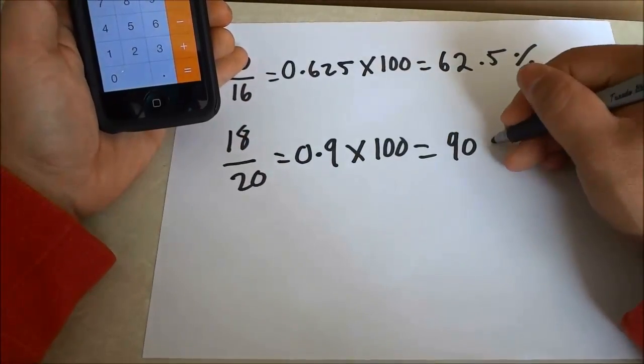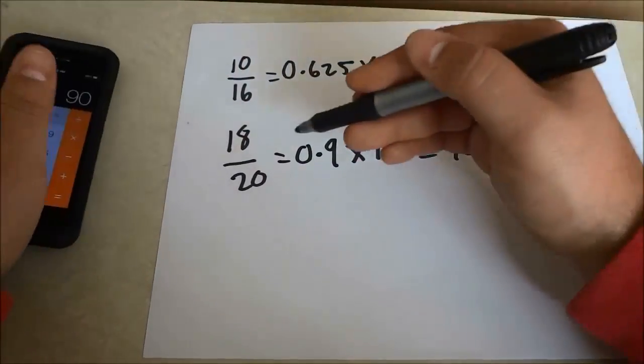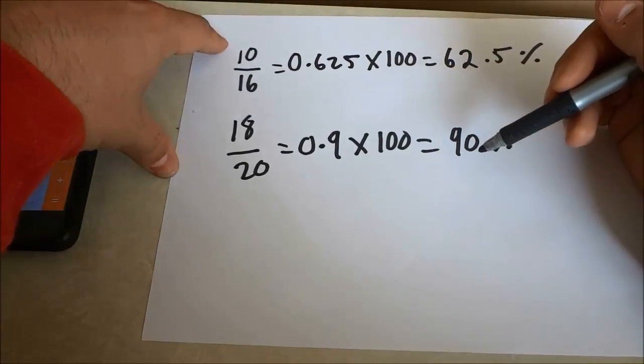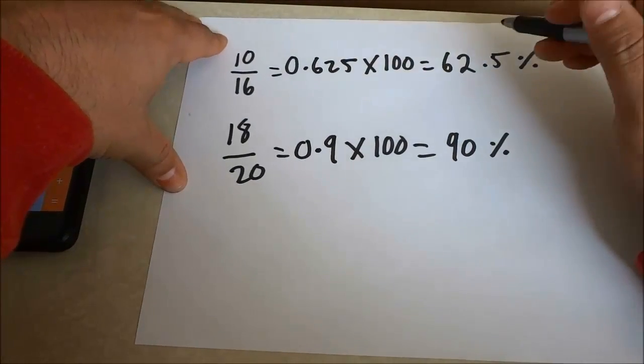And that is the percentage. So 18 out of 20 is equal to 90%. And that's basically it.